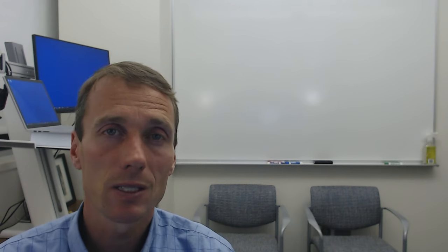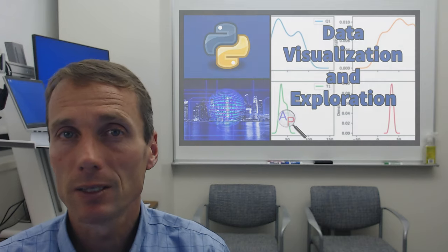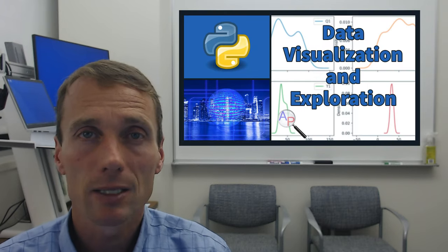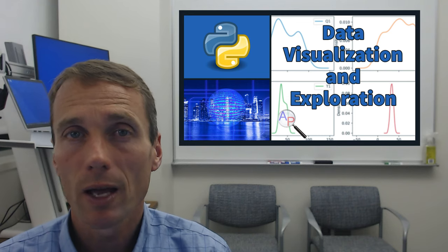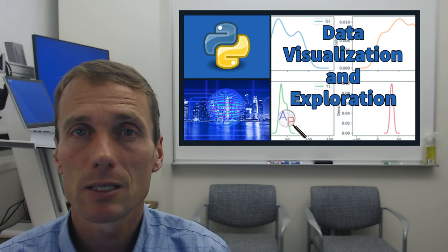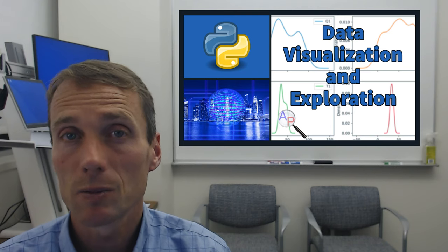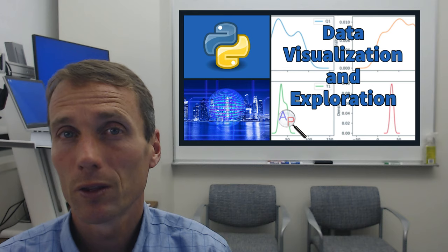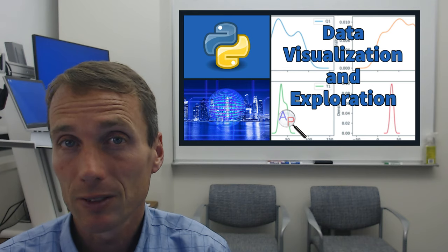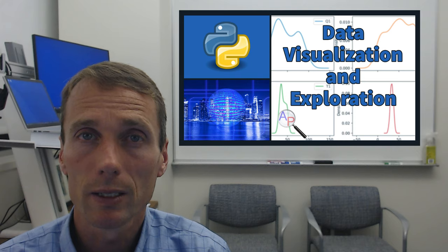Today we're going to be talking specifically about data visualization and how to do that in Python with just a few lines of code — creating some very nice and complex charts to understand both the data itself and how it correlates to other columns. We can see trends, box plots, outliers, and how changing one variable affects another. So let's jump right into it.